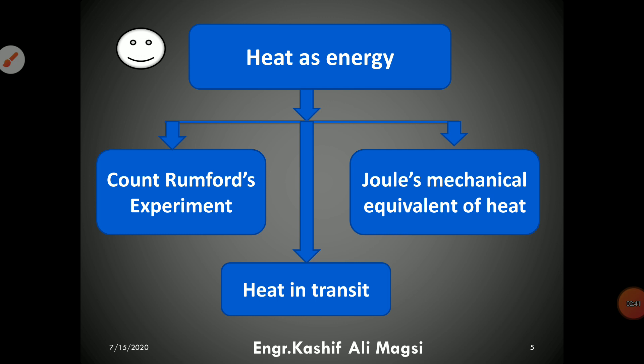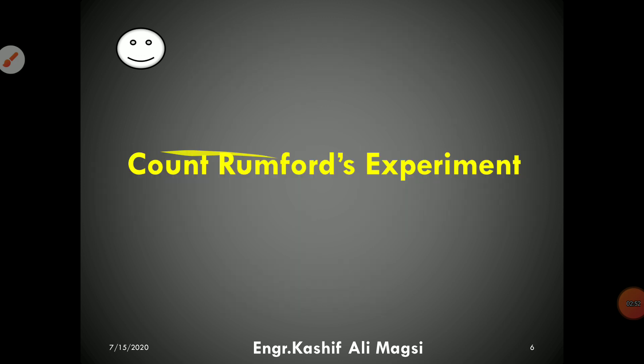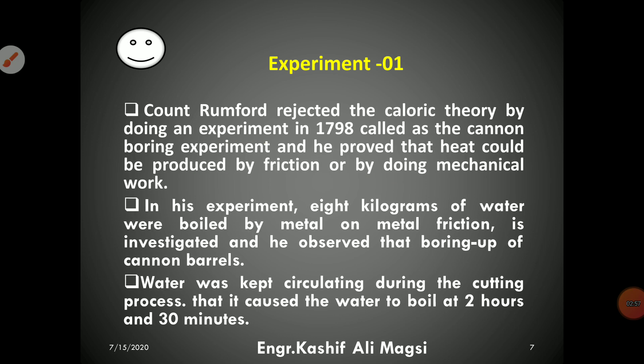Heat as an energy is a counter-argument to the caloric theory experiment. It involves the mechanical equivalent of heat and heat in transit. Count Rumford's experiment is provided here for students — it is a landmark achievement that establishes heat as a form of mechanical energy.